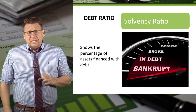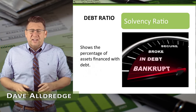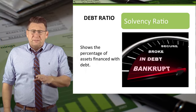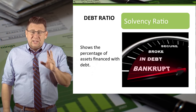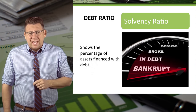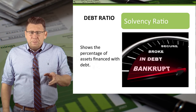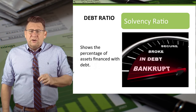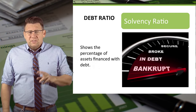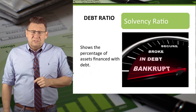The debt ratio tells us the proportion of assets financed with debt. A debt ratio of 0.5 means that debt finances half of the assets. The higher the debt ratio, the greater the pressure to pay interest and principal. The debt ratio is a measure of solvency.